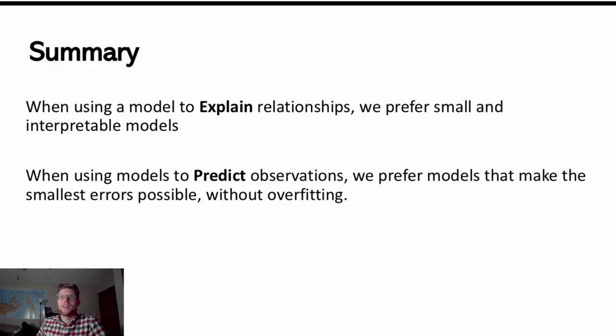As a summary, we talked about explanation and prediction as two approaches to modeling, two different motivations. When using a model to explain relationships, we prefer small interpretable models. We're trying to understand how these variables relate and quantify that relationship. When using models to predict observations, we prefer models that make the smallest errors possible without overfitting. We're trying to predict accuracy and use as much information as we can, but not at the expense of overfitting, as long as we are only modeling the signal and don't start modeling the noise.